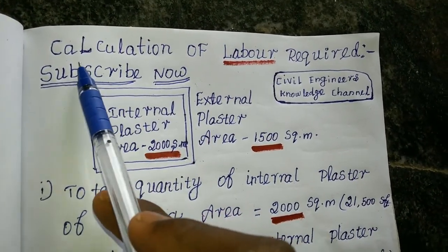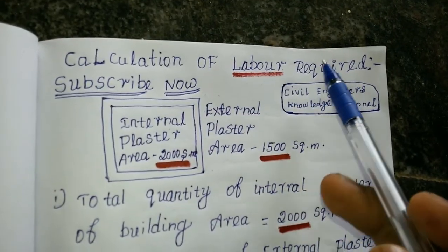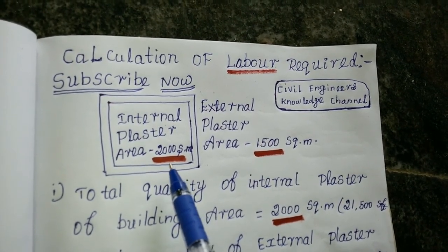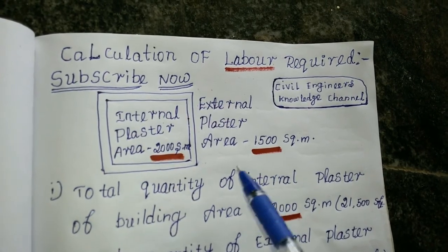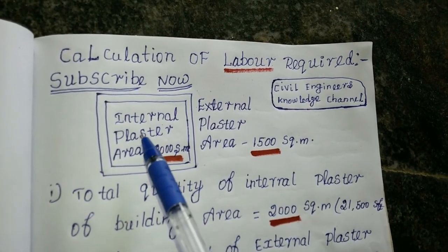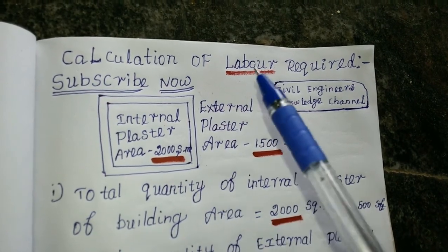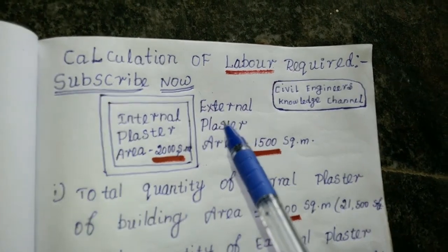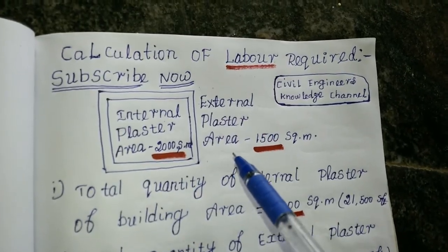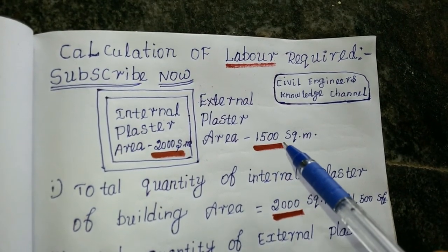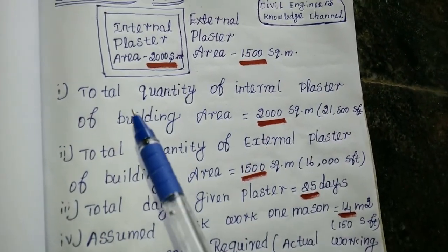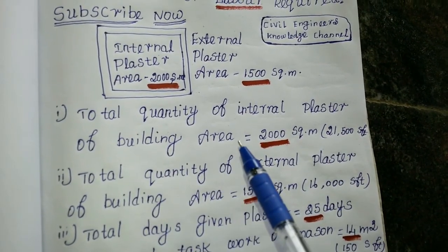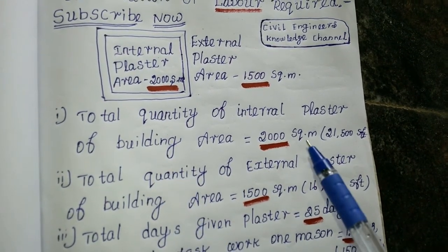Calculation of Labor Requirement. This is an internal plastering area — this is a plan. The internal plastering area is 200 square meters. Total quantity of internal plastering of building area: 200 square meters.